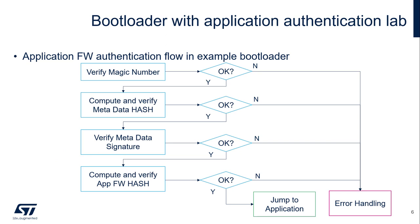This flowchart gives you an idea of the firmware verification procedure included in the bootloader. The first thing to be checked is the magic number. If the magic number is correct, then the bootloader will compute and verify the metadata hash. If that is also correct, then the bootloader will do a signature verification of the metadata itself. If that passes, the bootloader will compute and verify the application firmware hash. If everything goes fine, the bootloader will jump to the application. If anything goes wrong within those steps, the bootloader will go into the error handling procedure.